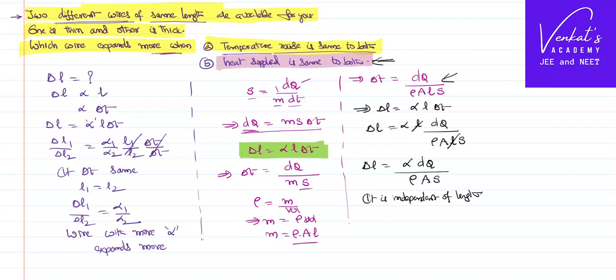Earlier it is dependent of length, which is an equal length or not equal length, it makes a difference here. But here that is not going to make any difference, independent of length. It is depending on what? dQ. But it is given in the problem that the heat supplied is same for both of them.